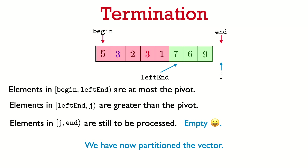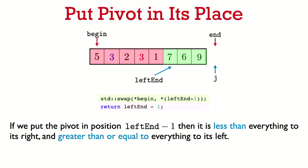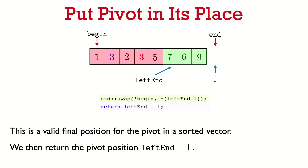There's just one more thing to do: put the pivot in its proper place in the final sorted vector. We swap the pivot with the element at position leftend minus 1. After the swap, everything to the left of the pivot is less than or equal to it (the red zone), and everything to the right is greater than it (the green zone), so this is a valid position for the pivot. The last step is to return the position of the pivot — we return leftend minus 1.